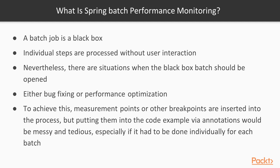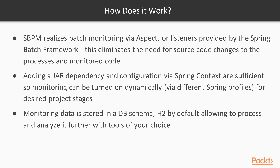Asserting something like that by annotations is of course possible, and there may be tools that do this in a similar way to JUnit. But inserting them into the actual live production batch code would be quite messy, and having them in there all the time — since you cannot take them out by design — would be very complicated, especially if it had to be done for each individual batch. That's why SpringBatch performance monitoring uses a slightly different approach.